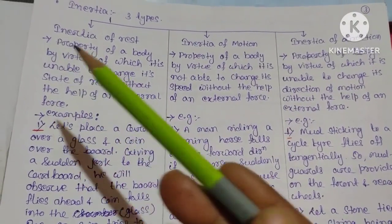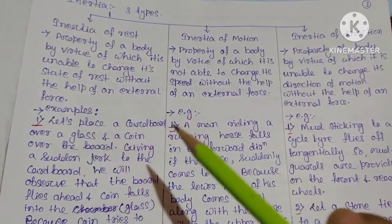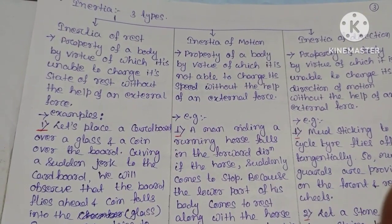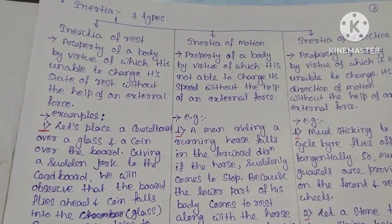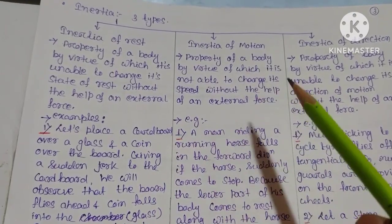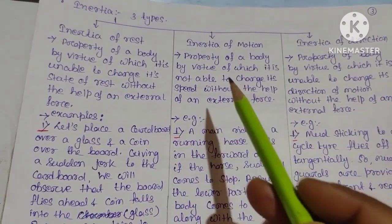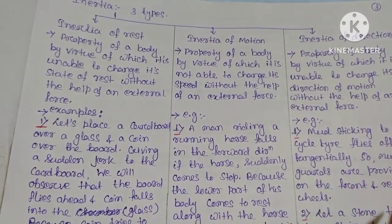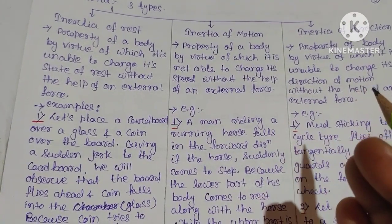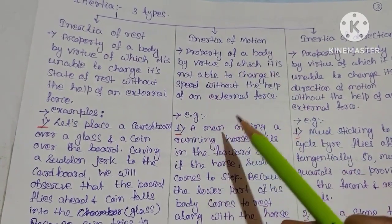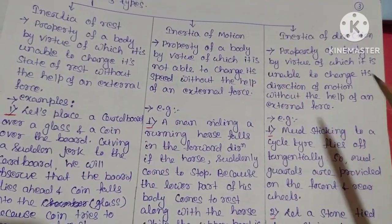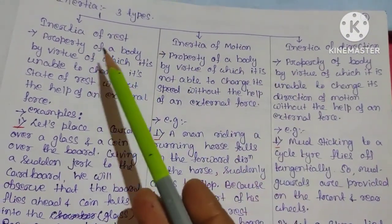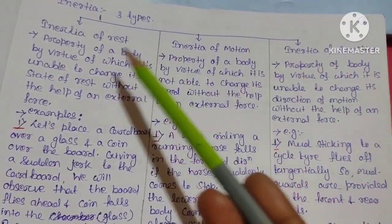Inertia of rest is the property of a body by virtue of which it is unable to change the state of rest without the help of an external force. Inertia of motion is the property of a body by virtue of which it is unable to change its direction of motion without the help of an external force.